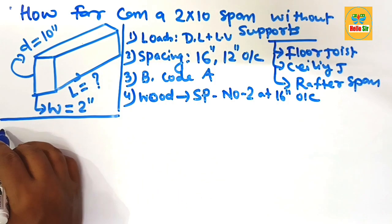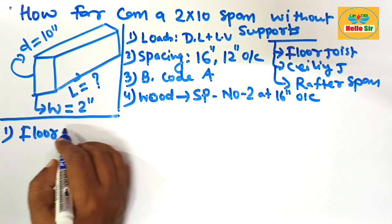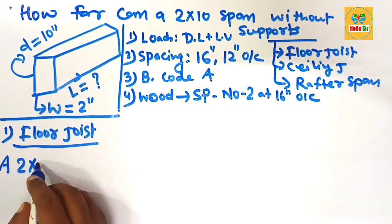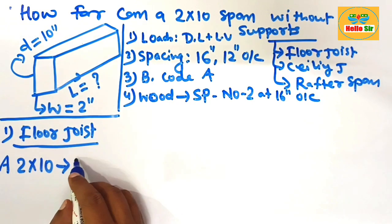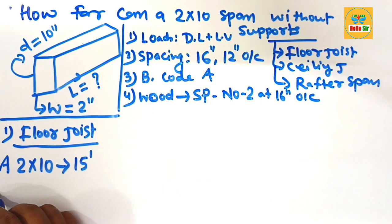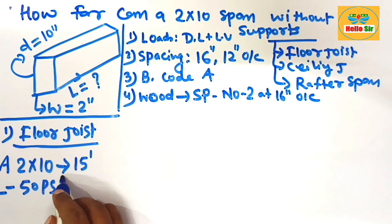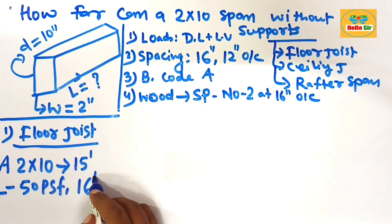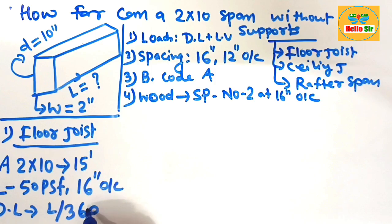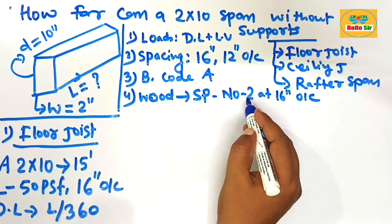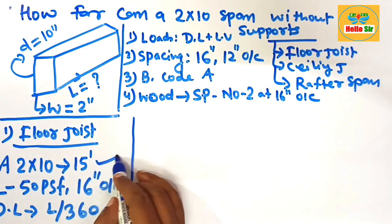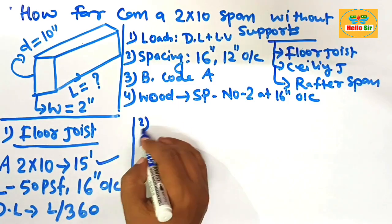First, find out the floor joist span. What will be floor joist span? A 2 by 10 dimensional lumber can span a maximum distance of about 15 feet as floor joist. And what are the conditions? The load should be 50 pounds per square foot, and the spacing between the joists 16 inches o.c., and the deflection limit that is L by 360, by using the Southern Pine number 2 grade of wood. A 2 by 10 dimensional lumber as floor joist can span maximum distance of 15 feet.